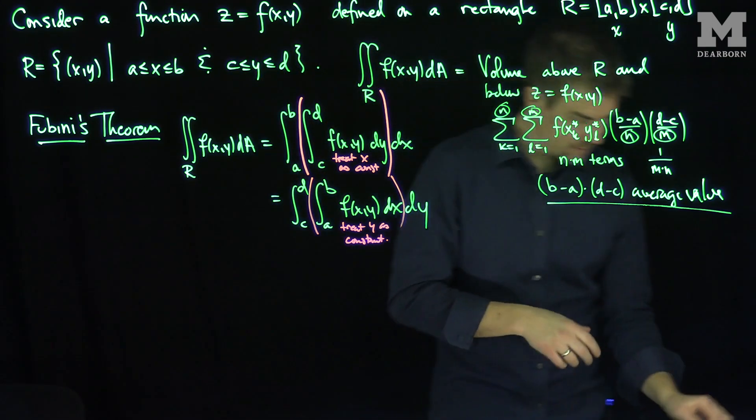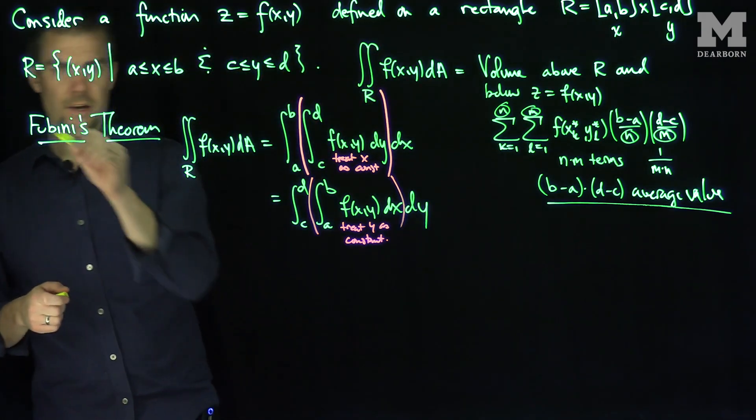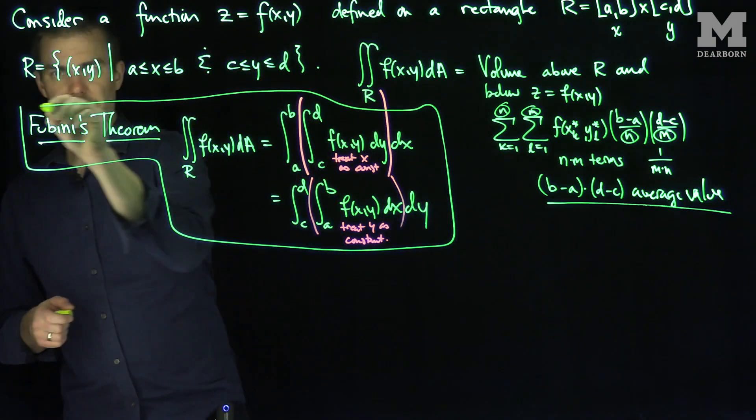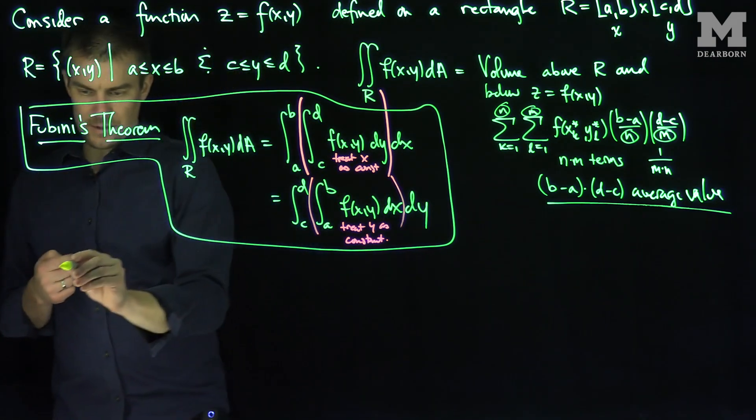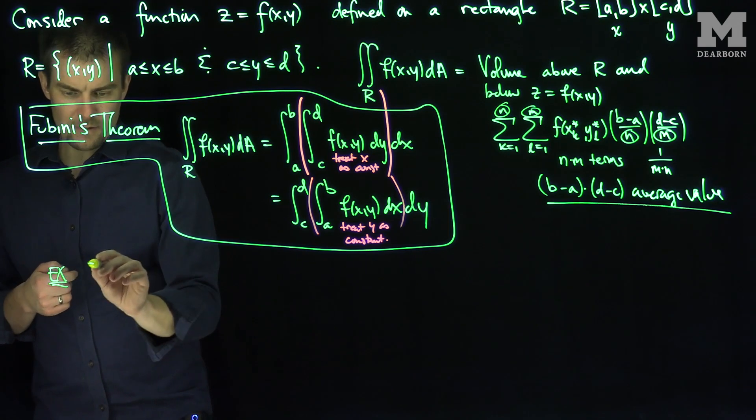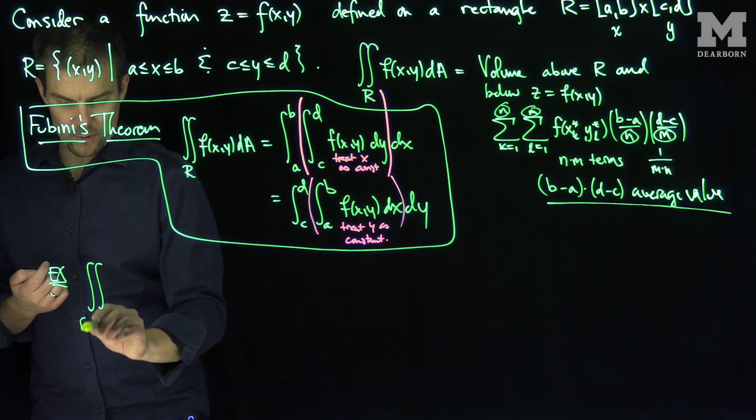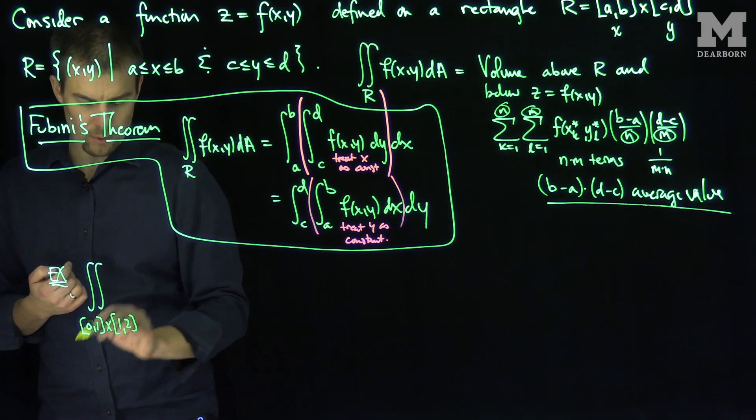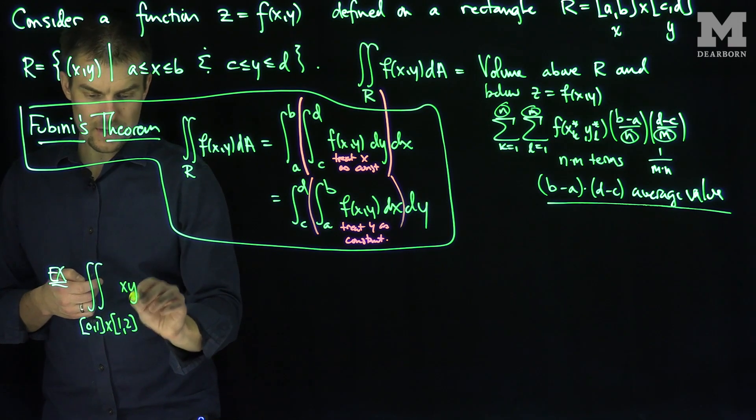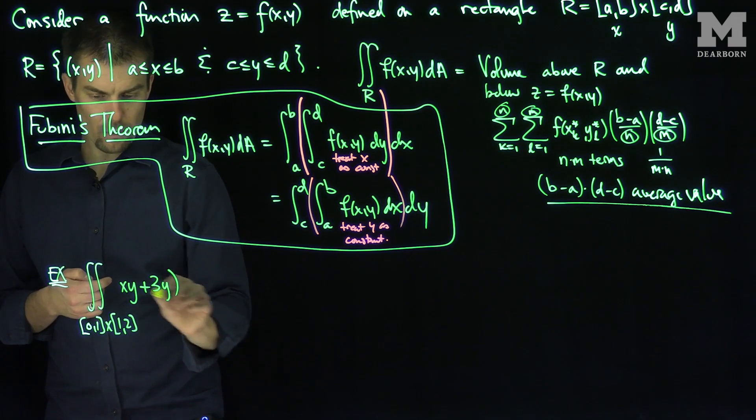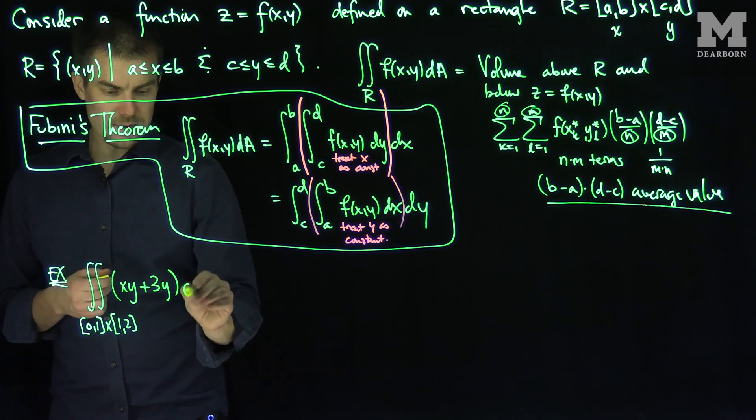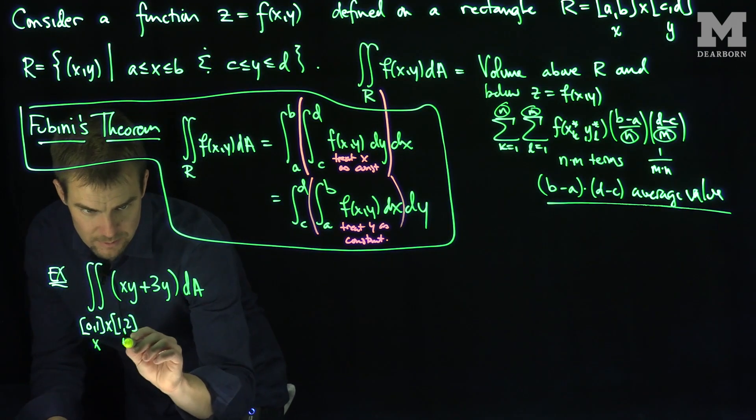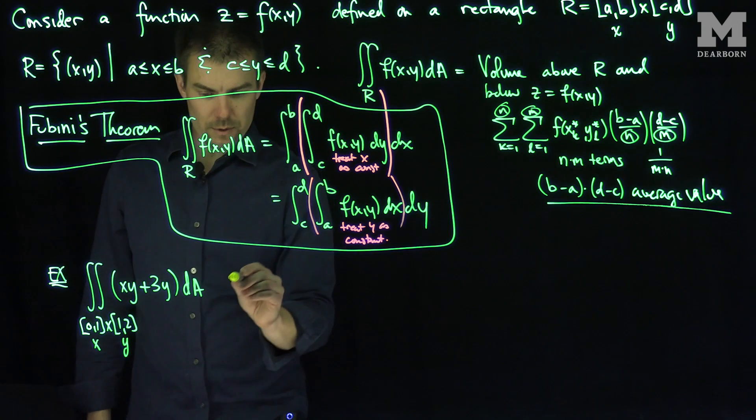So let's see an example of how we would do this. Here's an example. And so this whole thing over here is Fubini's theorem. It says that you can do either order you want. It's a very, very powerful theorem. And so if I was asked, for example, to find the double integral over what rectangle? [0, 1] for x, and [1, 2] for y, of xy plus 3y, and then I would say dA.